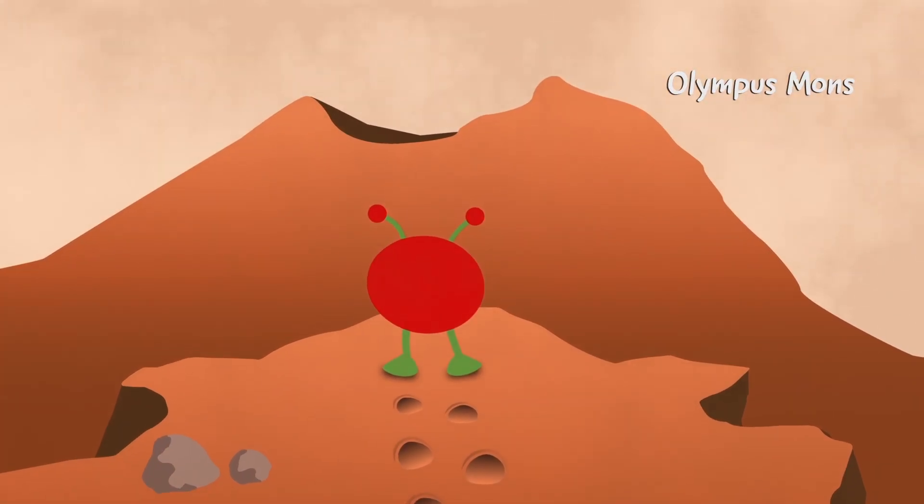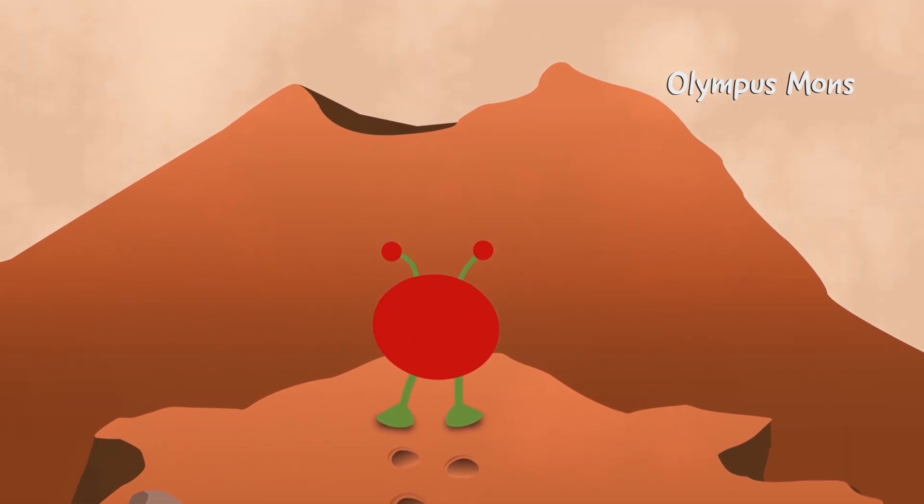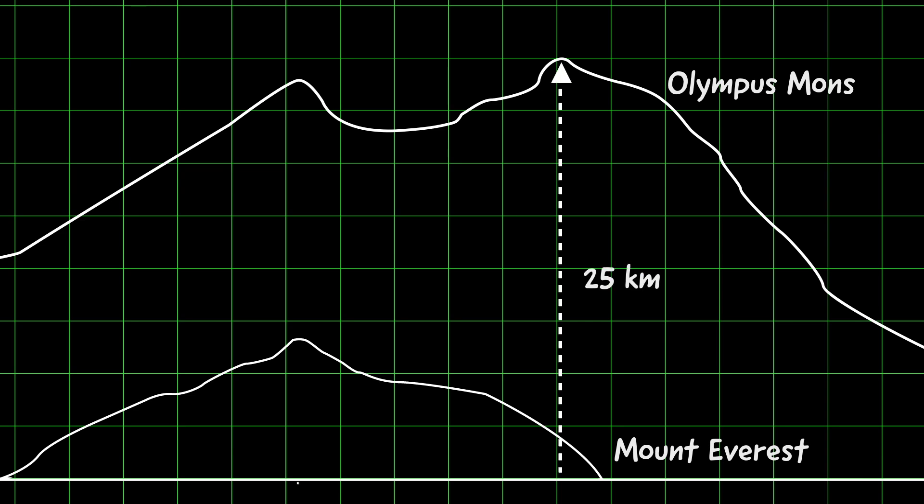If you ever visit, you simply must go to Olympus Mons. It's the tallest volcano in the solar system. It's nearly three times higher than Earth's Mount Everest.